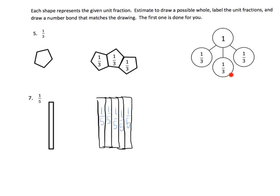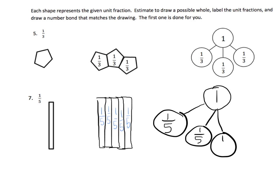And then they want us to build a number bond, okay, so that's going to look like a one and then how many fifths are we going to have? We're going to have five of those things: 1/5, 1/5, 1/5, 1/5, and 1/5. And there is our number bond that matches our drawing.